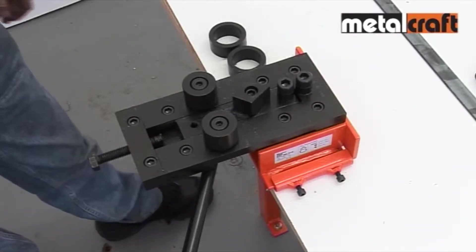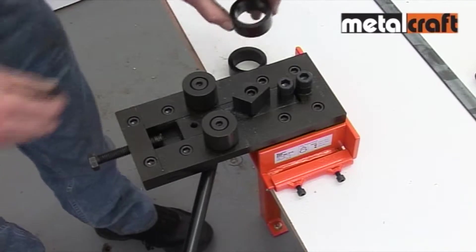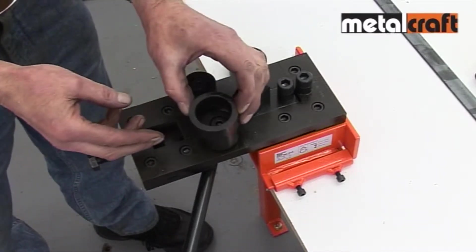If you bend in lighter gauge metal less than 5mm thick, you drop the sleeves provided over the side rollers to help make sure a tight bend is achieved.